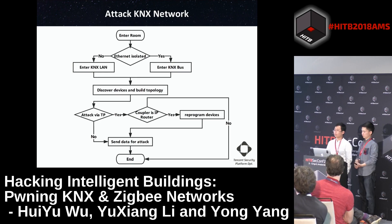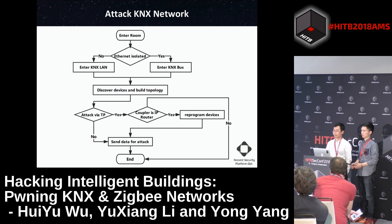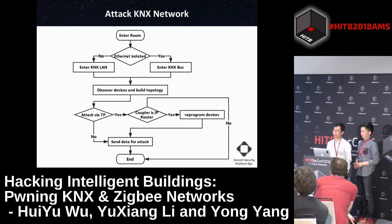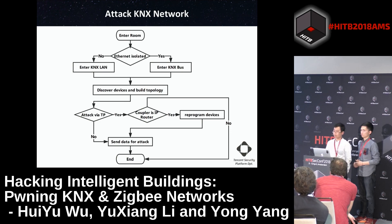This is the general process of attacking the KNX network. The first step is to determine whether the Ethernet network is isolated. If not, we can enter the LAN by cracking it. After entering the LAN, we discover devices, build topologies, and finally send data for the attack. If the Ethernet is isolated, we need to enter the KNX bus physically, discover devices, build topologies. If we find the couplers are IP routers, we can reprogram devices including modifying coupler network configurations, and finally send a full attack.